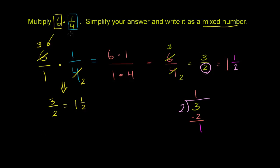And let's think about why this makes sense. Let's think about what 6 times 1/4 is. Let me draw 1/4. Let's say that that is 1/4 right there. And let's do 6 of them. So that's 1/4. That's 2/4. That's 3/4. That's 4/4, which would be a whole.